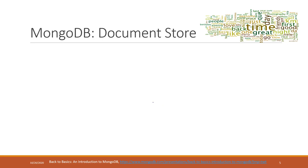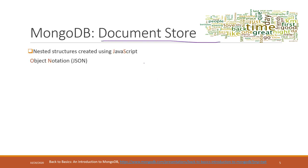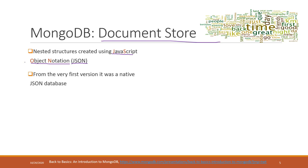MongoDB is a type of non-SQL database, and specifically it uses the document store. Document store means they are using JSON documents. The basic unit of data in MongoDB is JSON, which stands for JavaScript Object Notation. This is now a very popular format for storing data. Initially, MongoDB stored JSON directly — in its early versions it was a native JSON database.